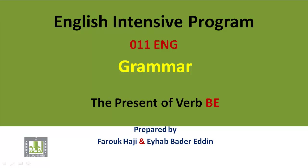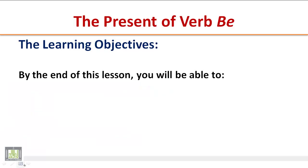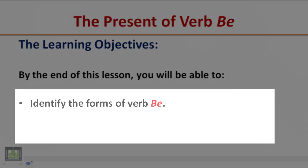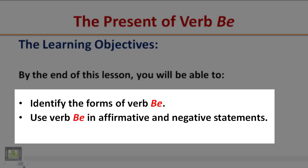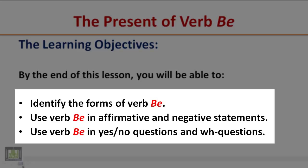English Intensive Program 011: Grammar - The Present of Verb Be. The learning objectives: by the end of this lesson you will be able to identify the forms of verb be, use verb be in affirmative and negative statements, and use verb be in yes/no questions and WH questions.